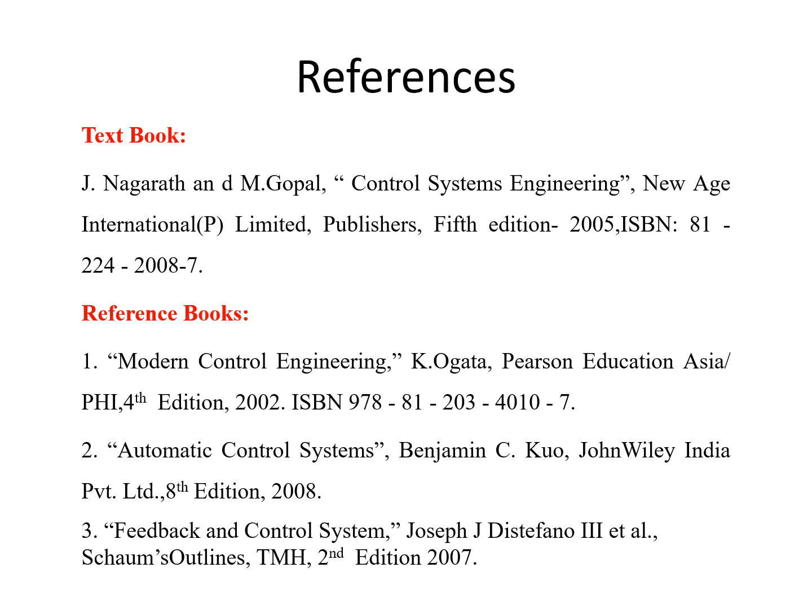In today's session, we have discussed about standard test signals. The four important standard signals used for time domain analysis are impulse signal, step signal, velocity signal (ramp signal), and acceleration signal (parabolic signal). We have learned how to find the Laplace transform for all these standard test signals. We took an example of a first order system with transfer function K/(Ts+1) and found the impulse response. I hope today's concepts were clear. You can refer to any one of the books listed here for these topics. Thank you all. Have a nice day. Jai Shri Gurudev.